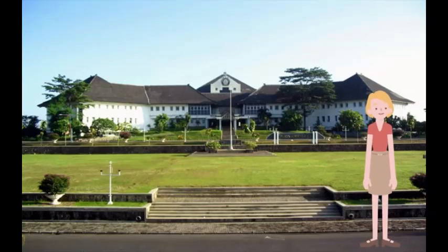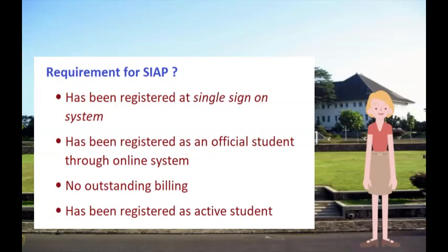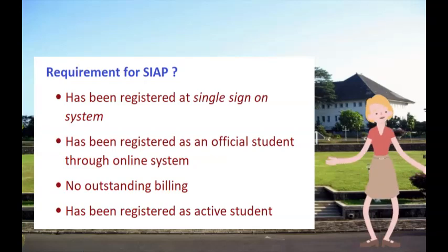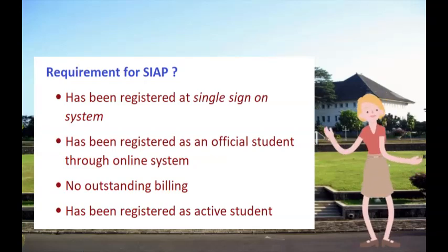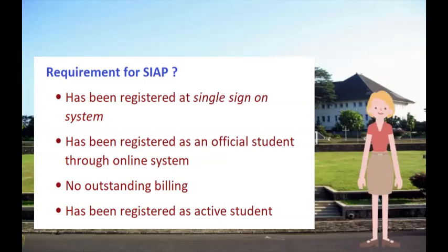Requirements for SIAP: 1. Has been registered at the single sign-on system. 2. Has been registered as an official student through the online system. 3. No outstanding billing. 4. Has been registered as an active student.